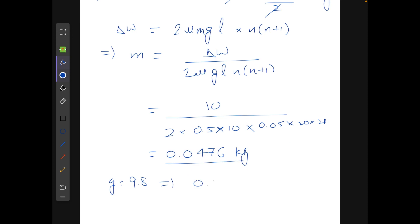And here if we take g equals 9.8, we are getting something like 0.0485. And I feel that in the answer they have approximated n times (n+1) to be approximately equal to n squared, and using this approximation we get the answer to be approximately 0.05 kg.